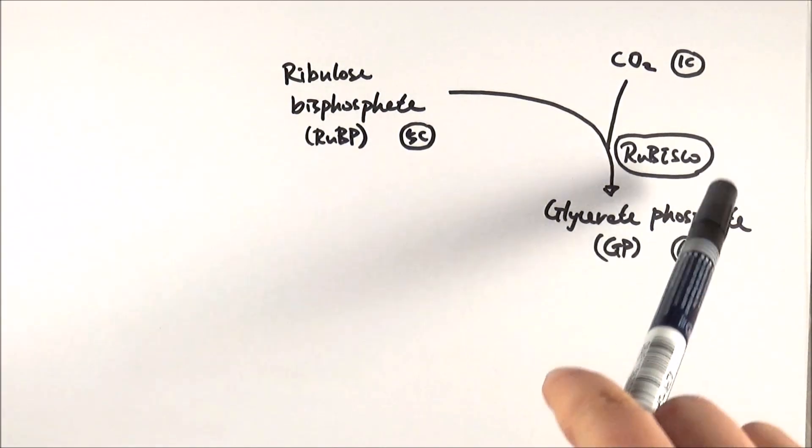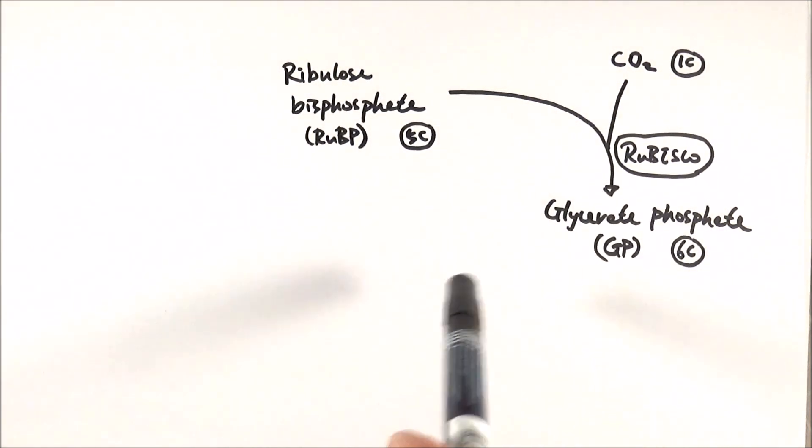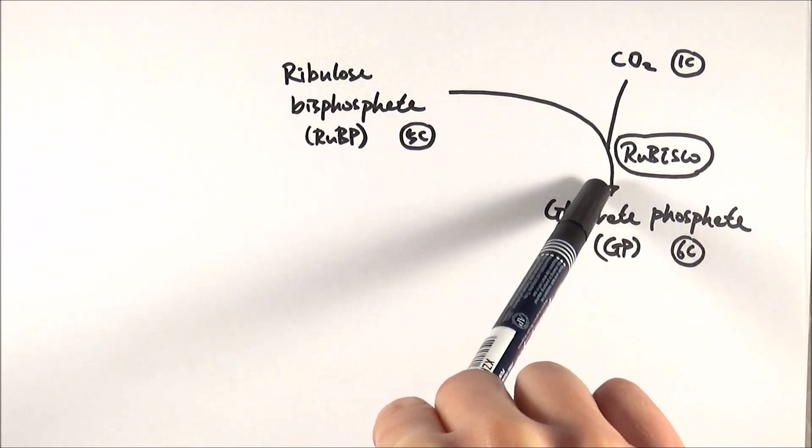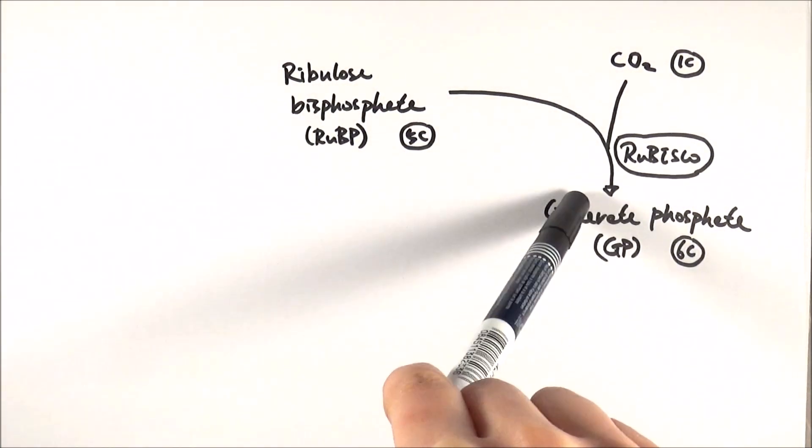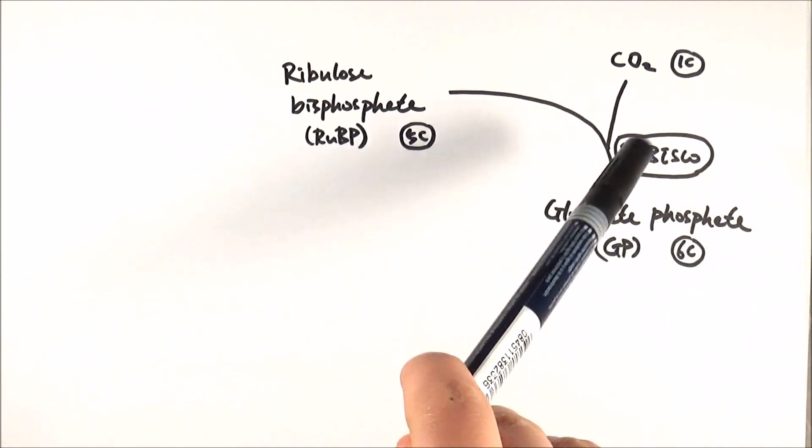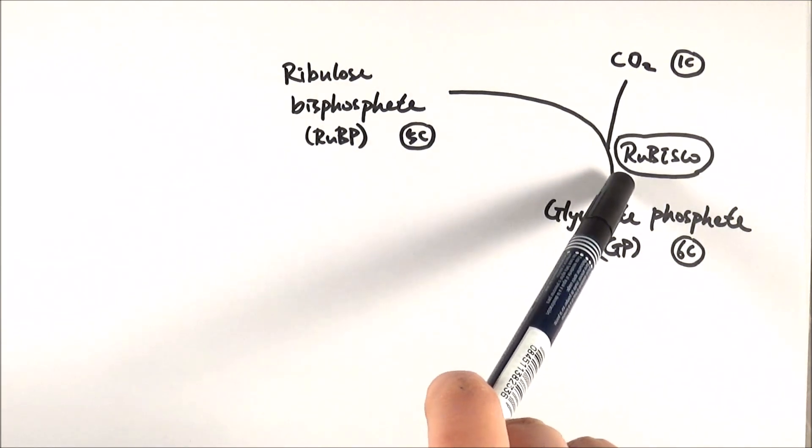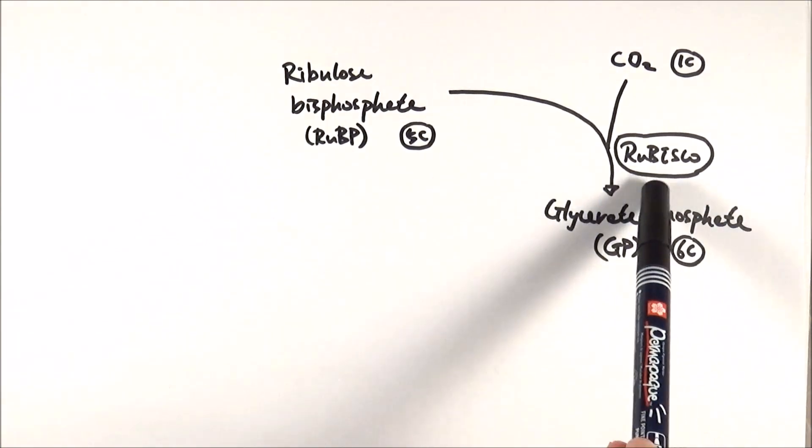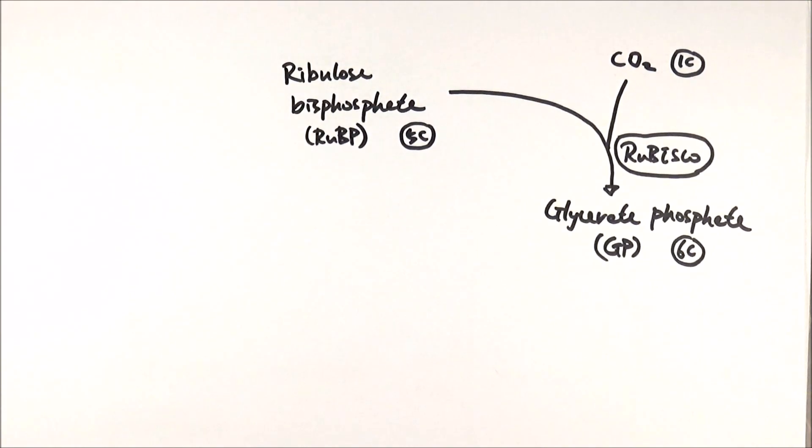Now this reaction here is catalyzed by an enzyme called RuBisCo, and the full name for it is ribulose bisphosphate carboxylase. It is one of the most abundant enzymes in plants. However, it is also very inefficient because it can be competitively inhibited by oxygen at the same time. However, this is key in this carbon fixation reaction.